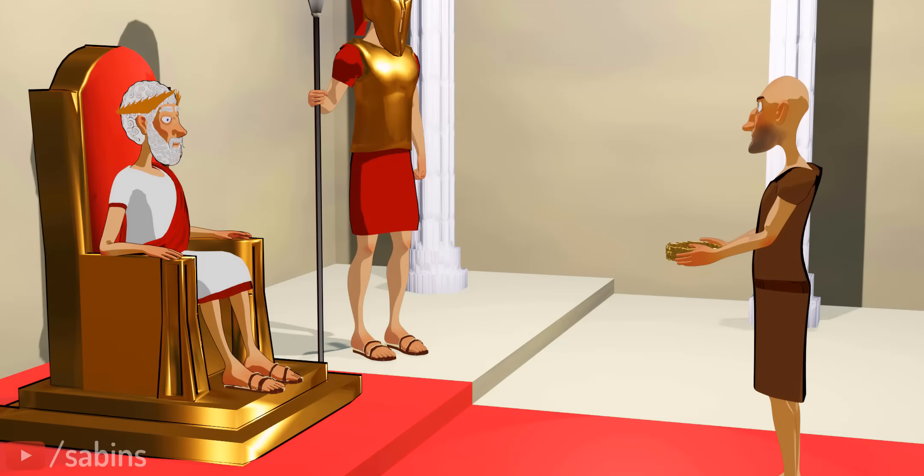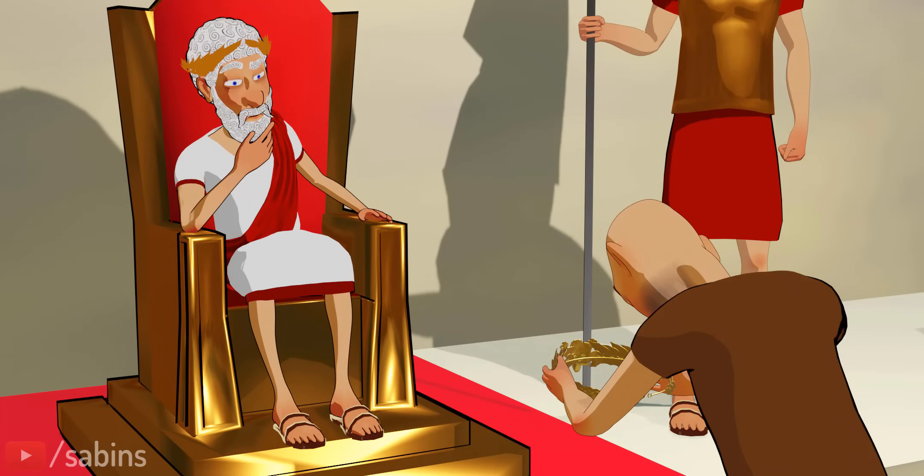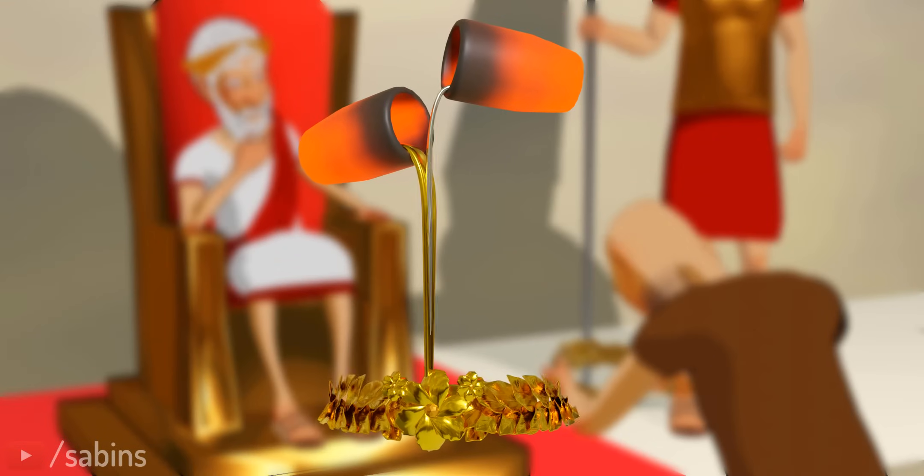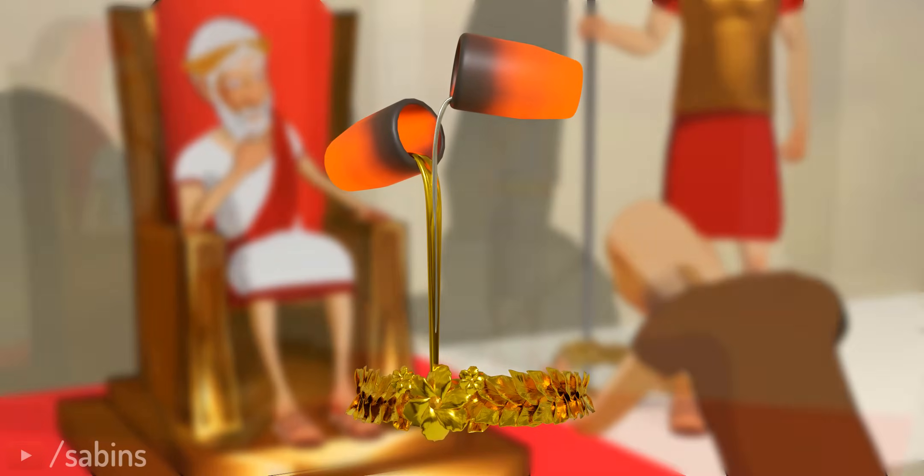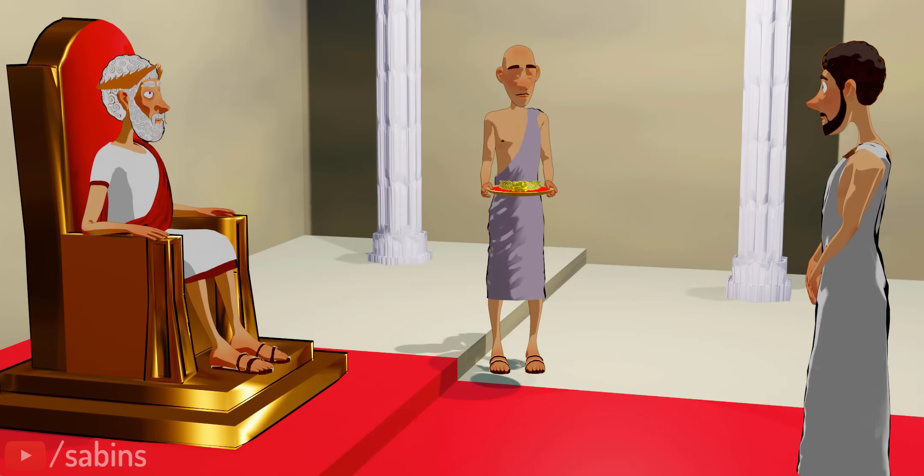The king of Syracuse was suspicious about his crown's gold quality. There were rumors that the goldsmith had mixed silver with the gold and cheated him. The king gave the task of checking the quality of gold to his most intelligent scientist, 22-year-old Archimedes.